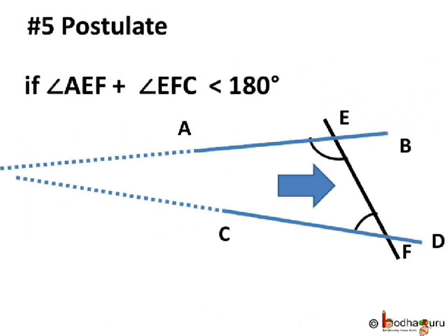So the two lines here are AB and CD and they are intersected by the third line and we need to find if they are parallel or not.